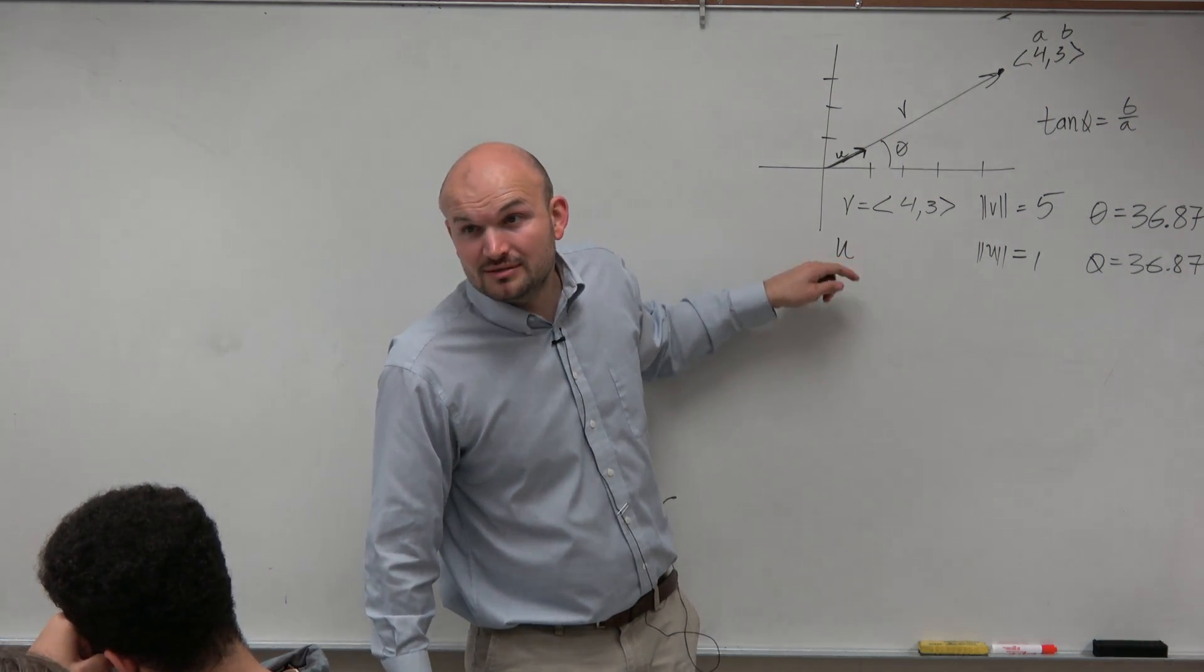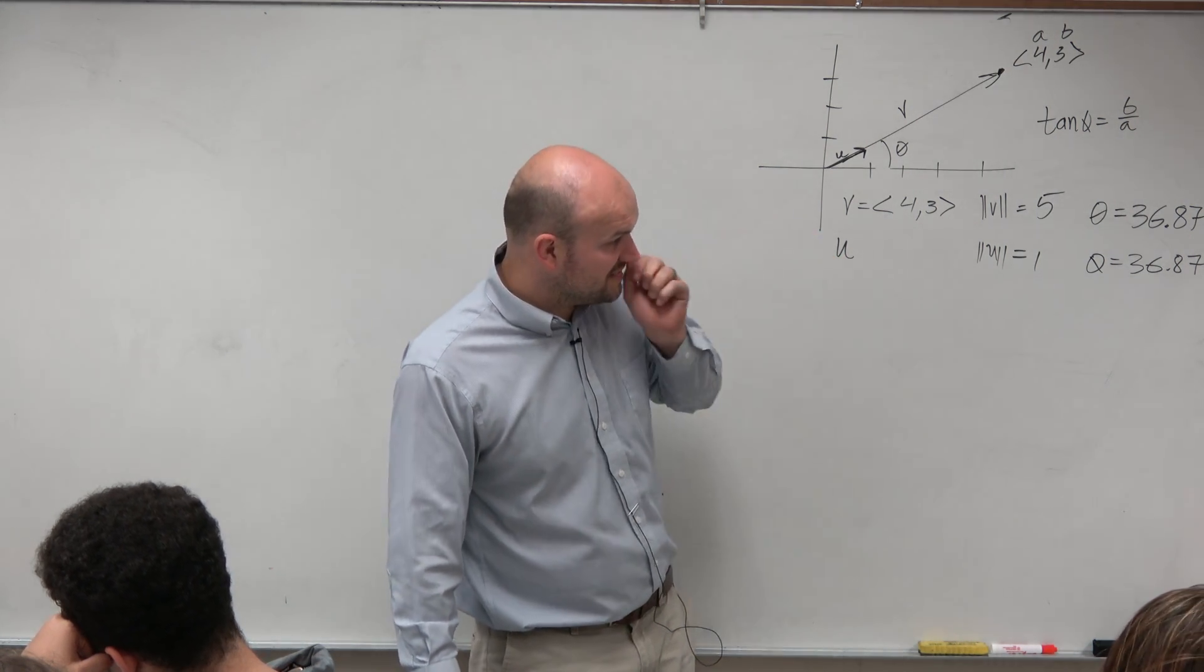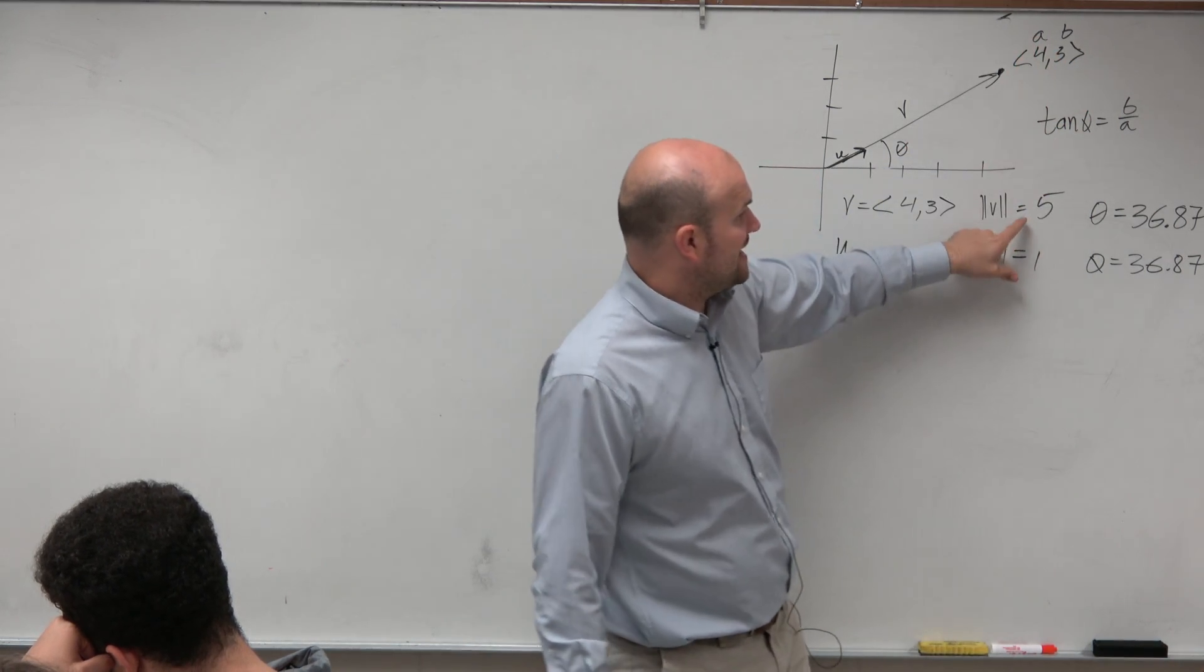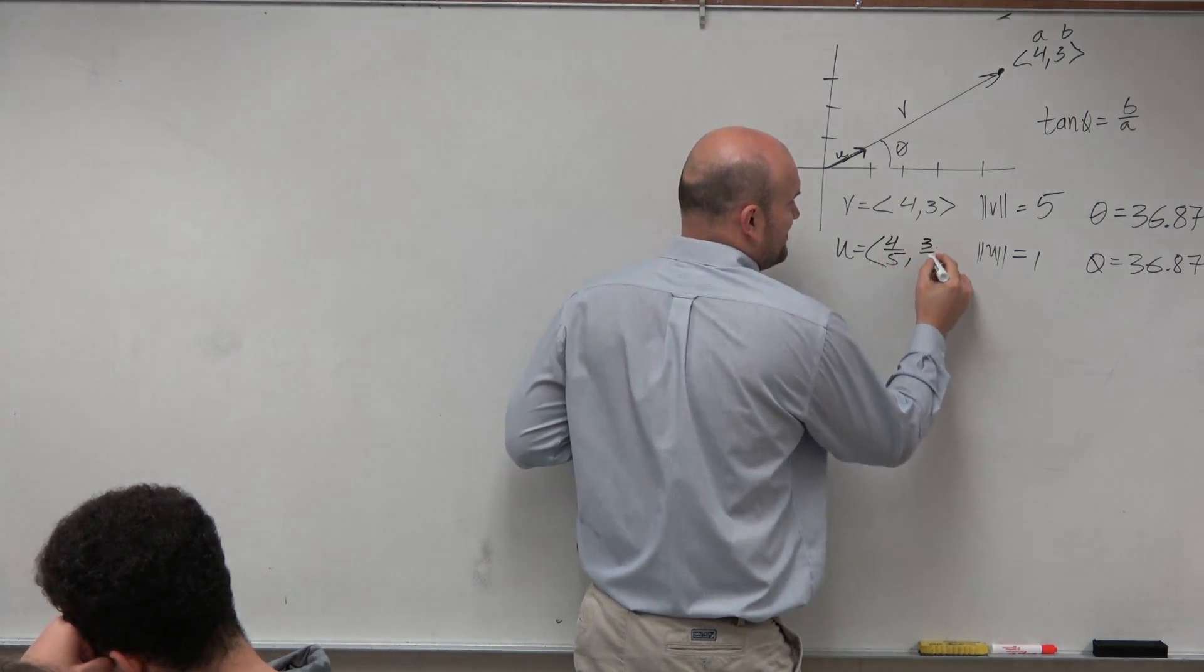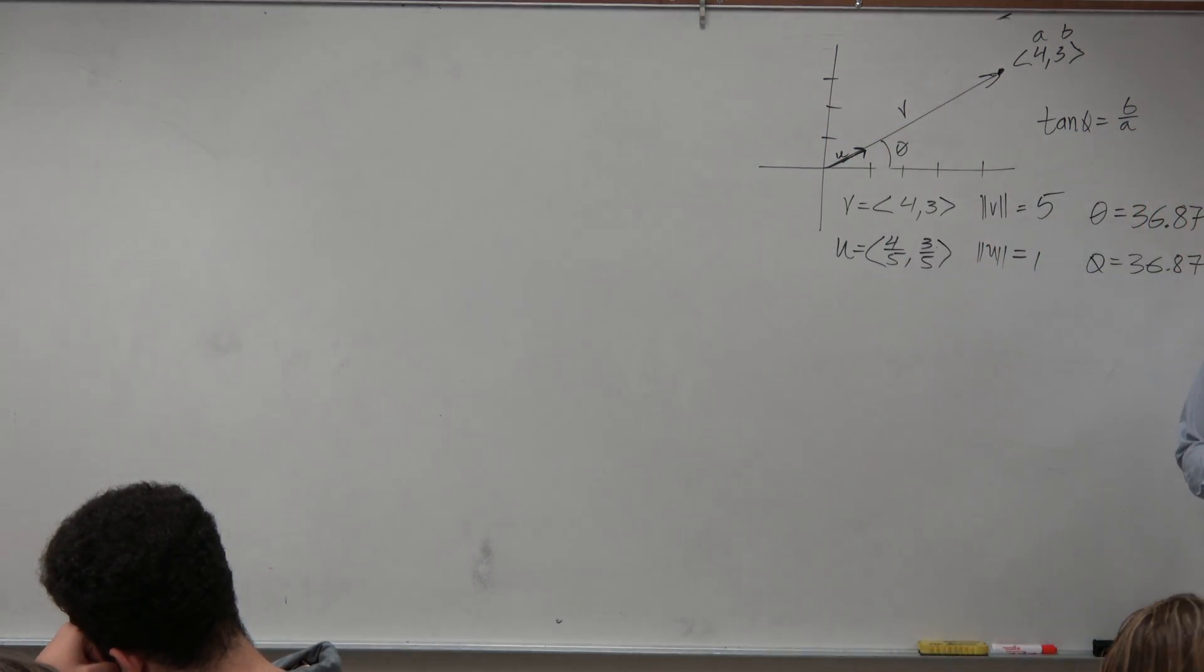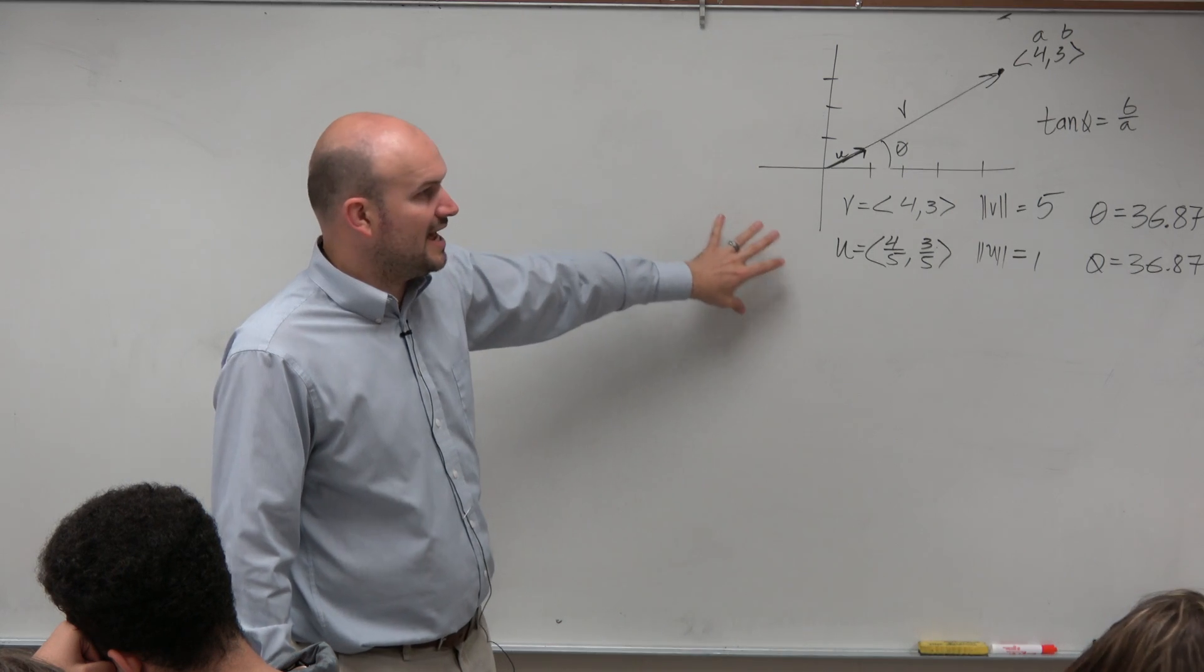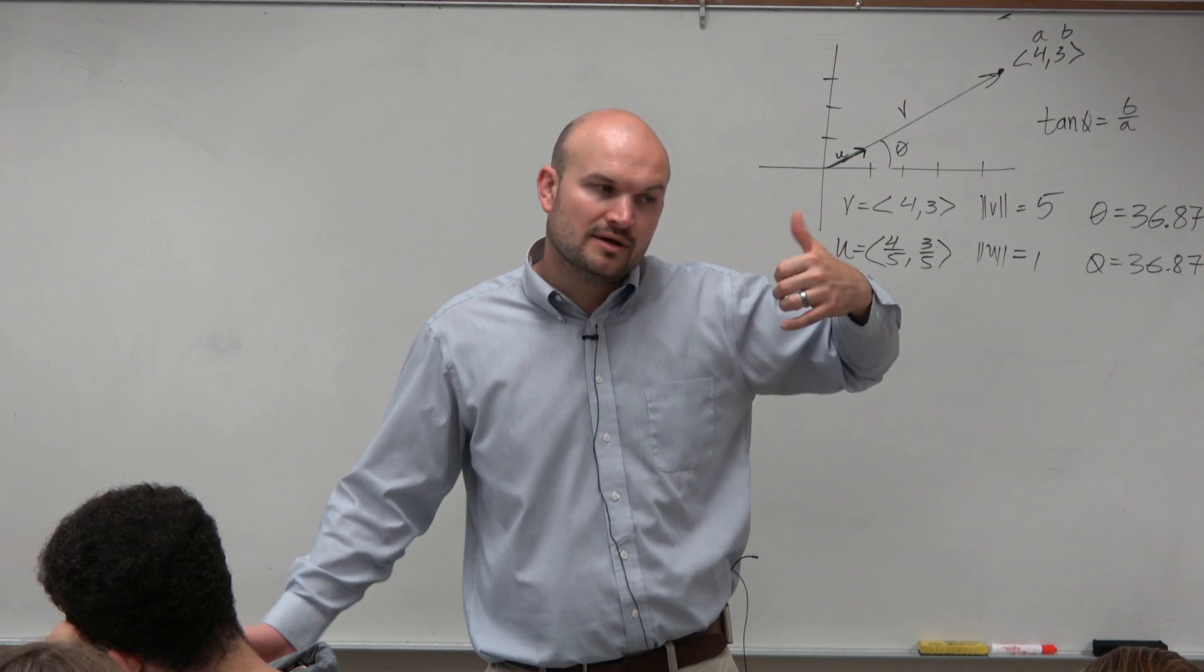The formula is written right up there on the board. The unit vector equals... yeah, it's the vector divided by its magnitude. So basically, you're taking both components of the vector and dividing it by its magnitude. So our unit vector was 4 fifths comma 3 fifths. And that was our unit vector. So today's entry level is actually pretty nice, because I know it's been a while for you guys. But that's kind of like a good review of what we learned in the last class period.